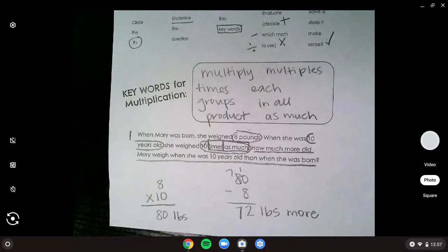Did we circle our numbers? Yes. Did we underline our question? Yes. Did we box those key words? Yes. Did we evaluate? Yes. And did we check? Does that make sense that she weighs 72 pounds more now? Yes. Think, she was a baby and now she's a 10 year old. Does it make sense that she weighs 72 pounds more? Yes. Right?